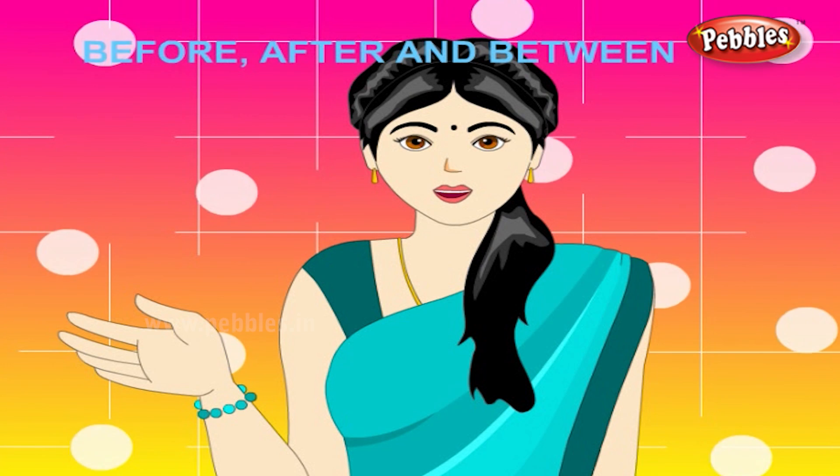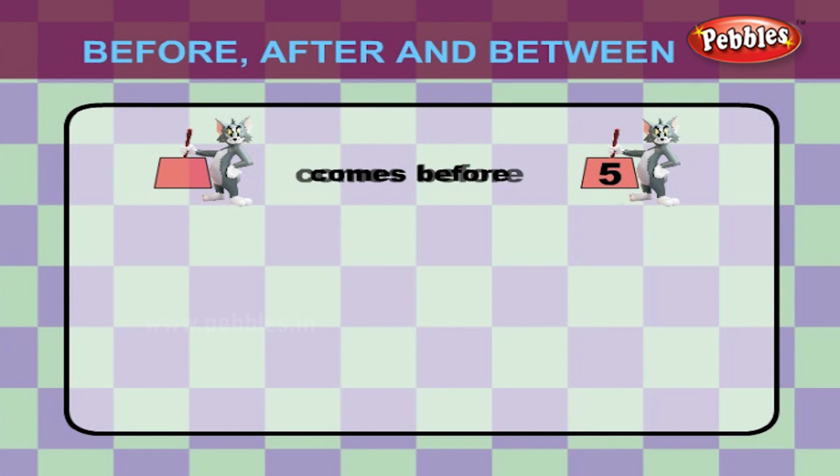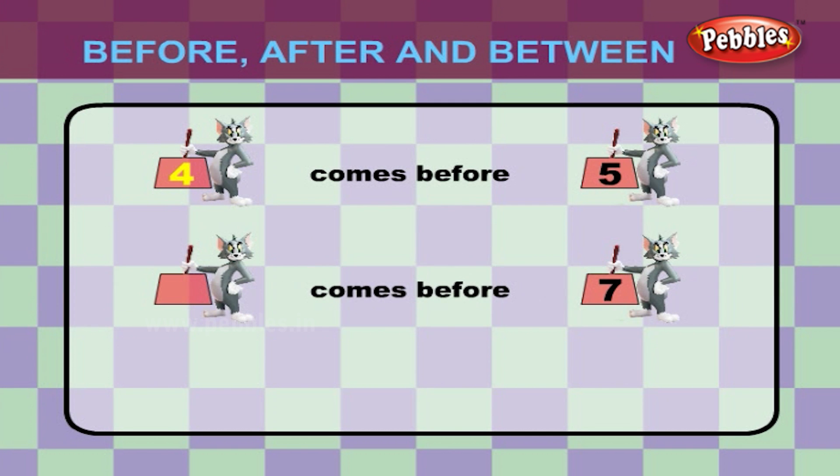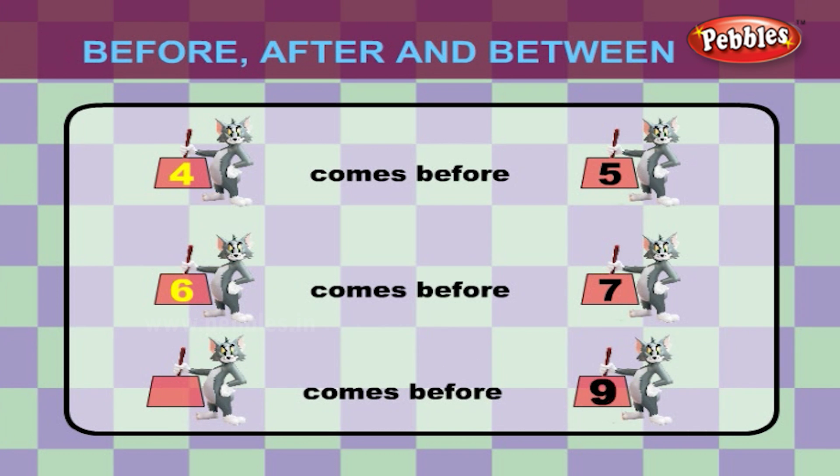Now, let us try some examples for BEFORE numbers. What comes before 5? 4. What comes before 7? 6. What comes before 9? 8.